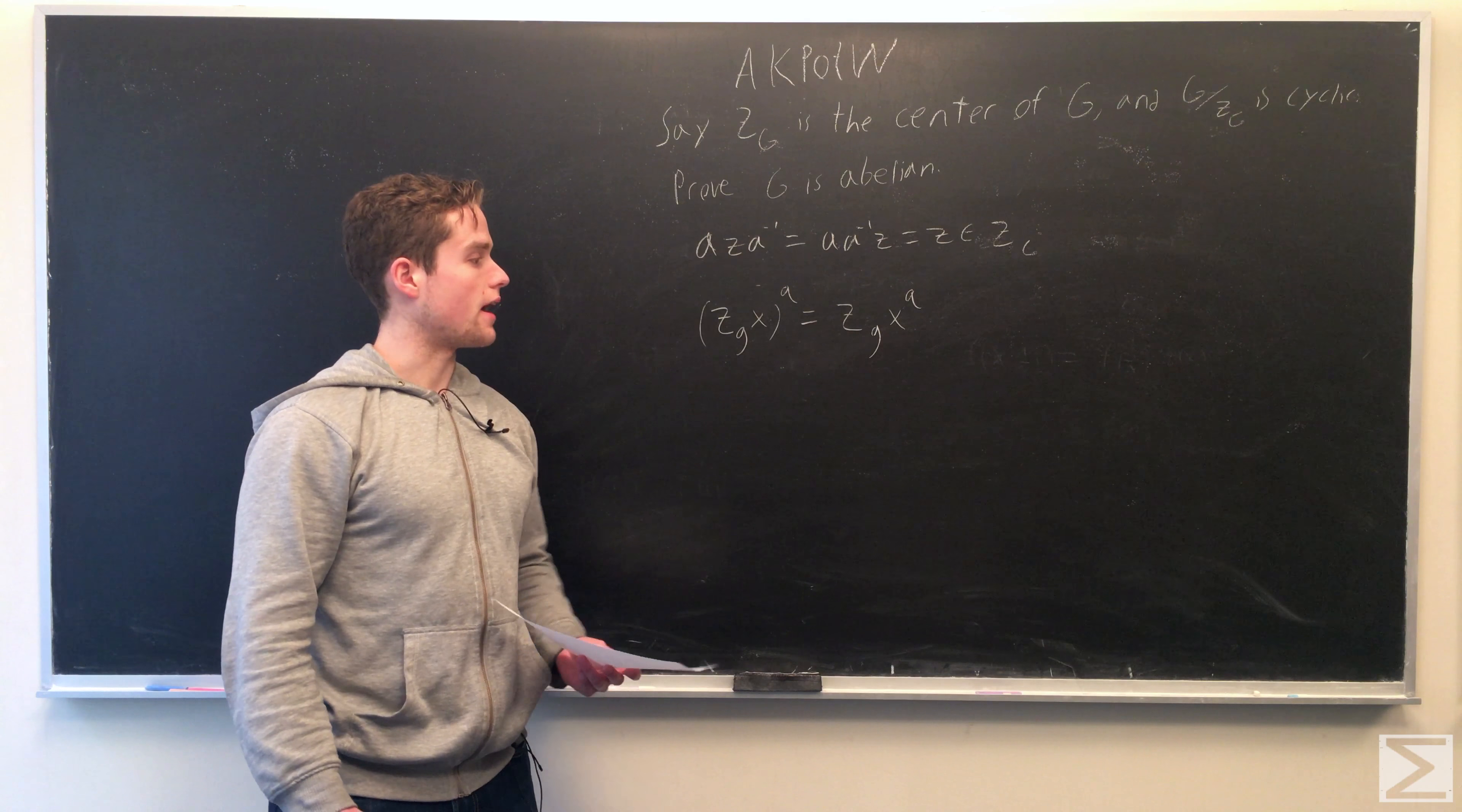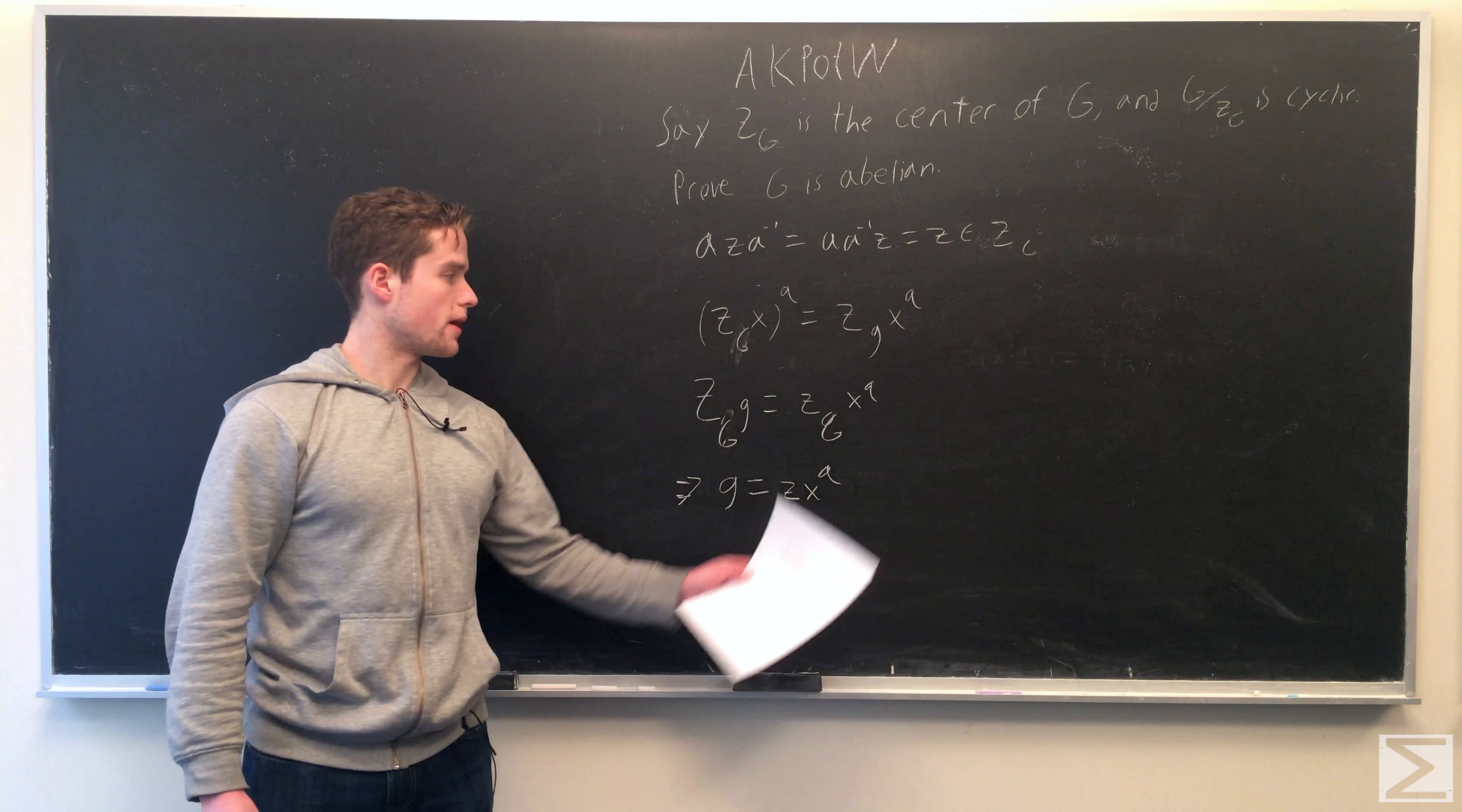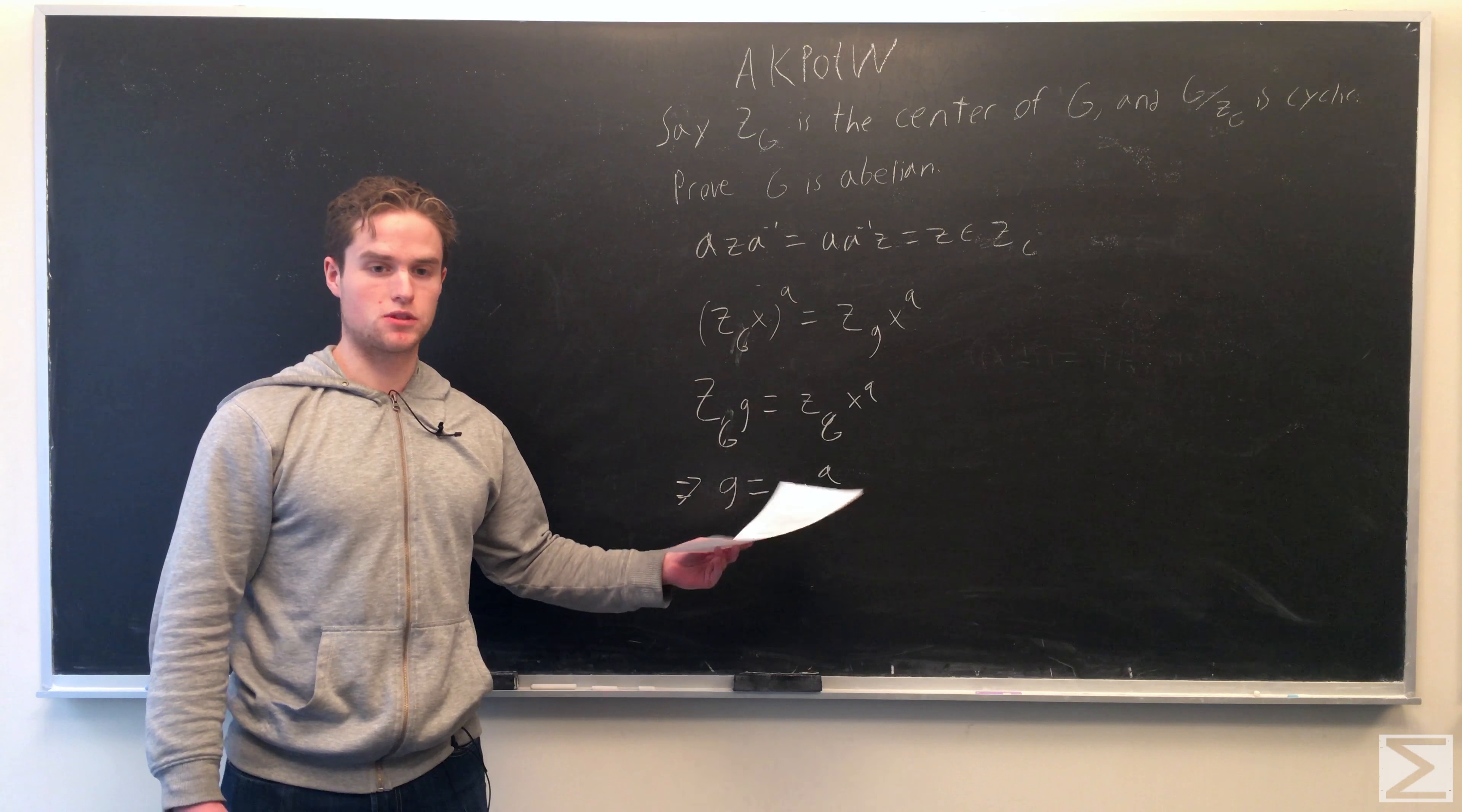So if we have some arbitrary element of G, I call it little g, we have its corresponding coset. So for some X^Q, Z(G), that corresponds to the coset Z(G)·g, where g is any member of our group G. So this is equivalent to saying g equals some element of our center Z times X to some power Q.